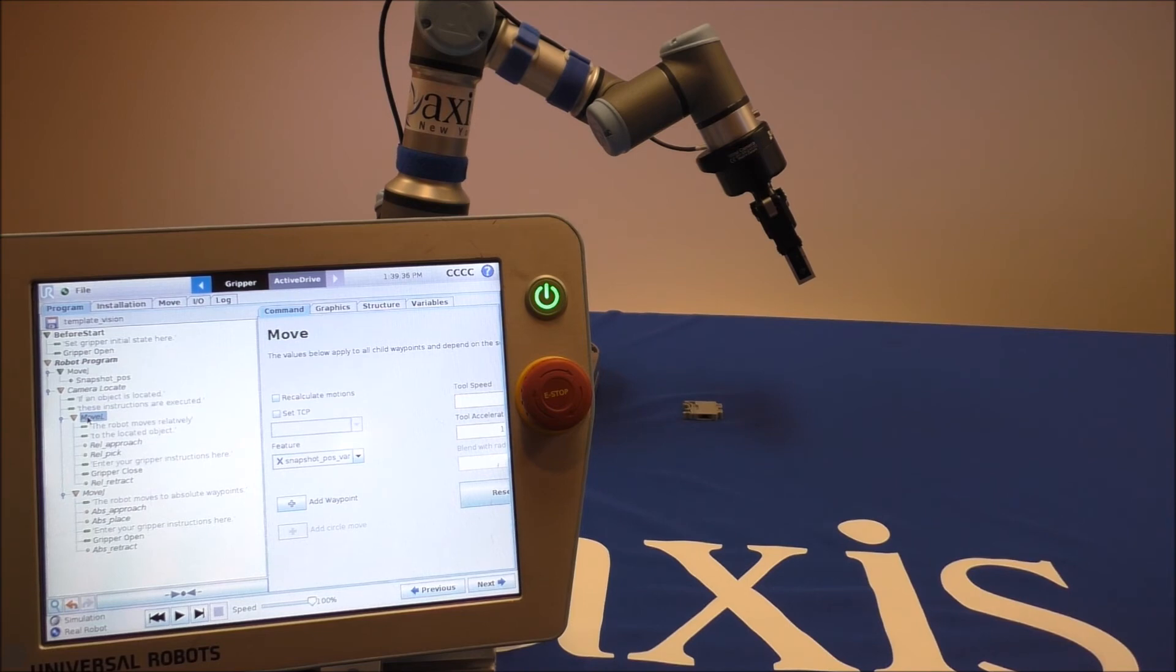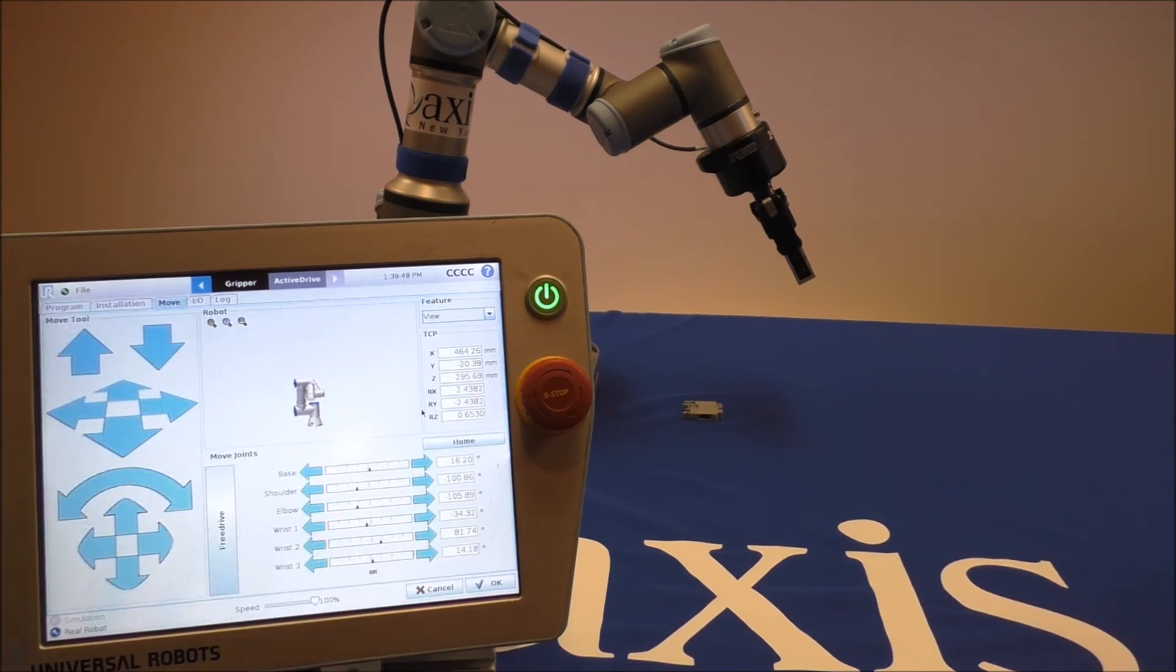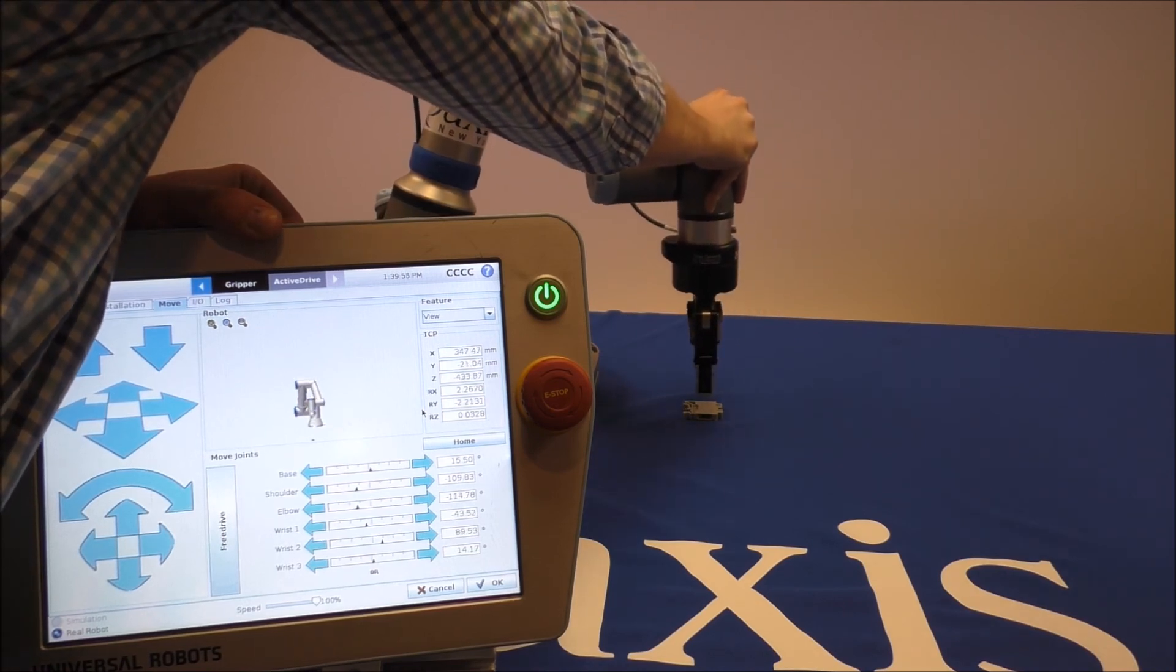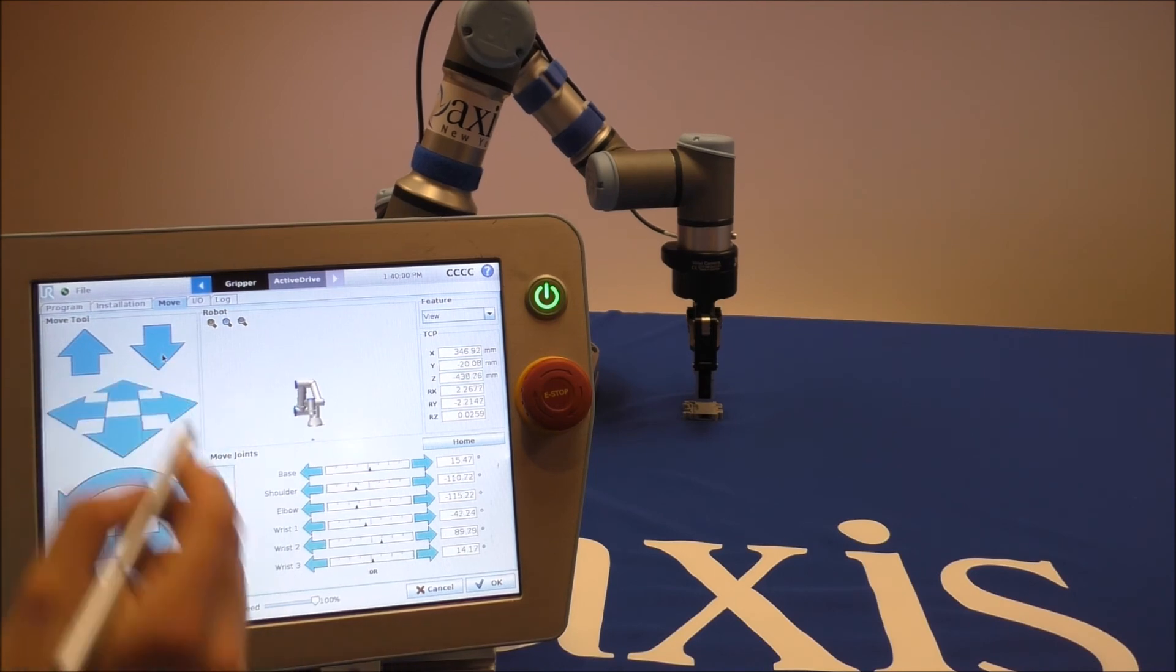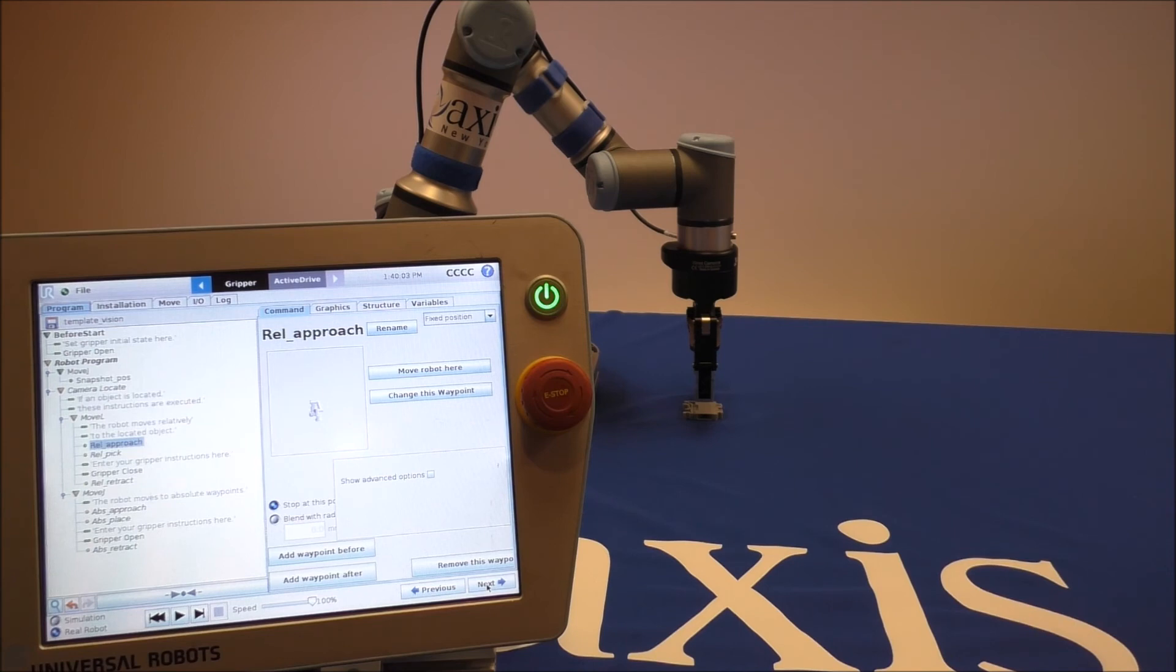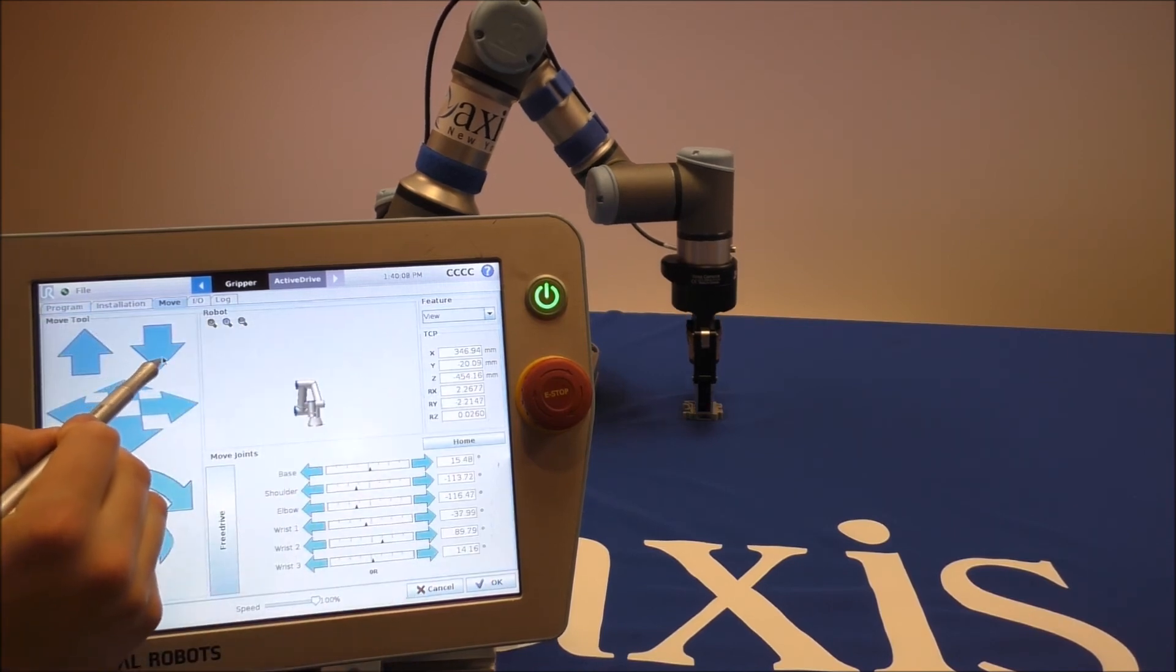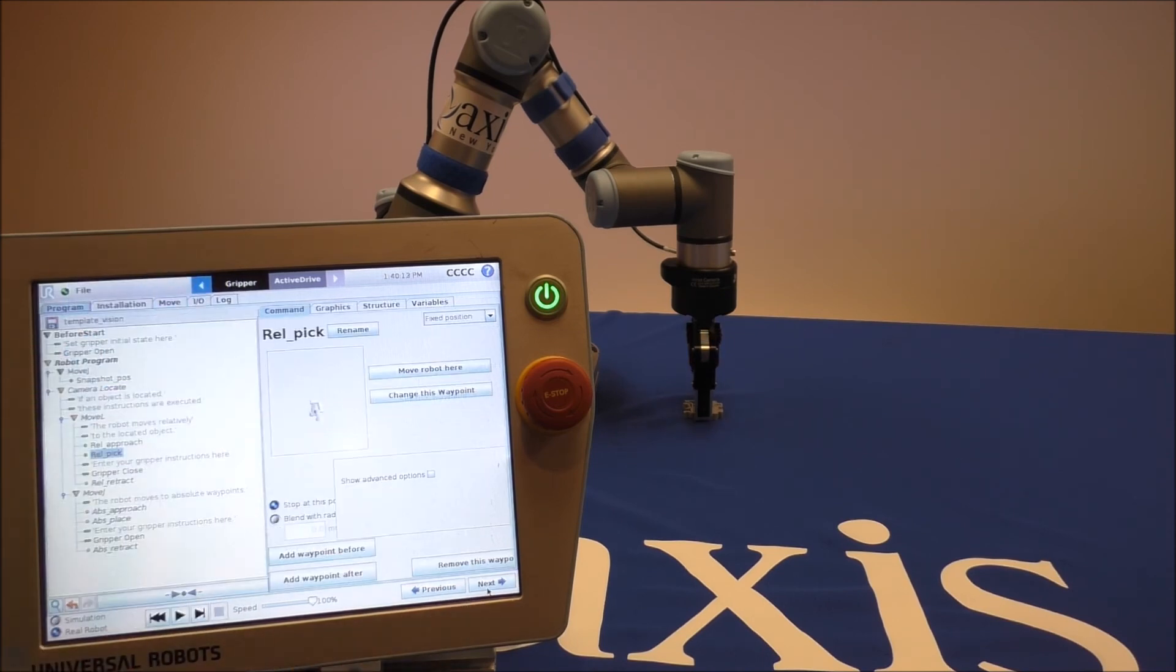You can set your relative positions by either using the free drive or by using the move functions. Here I'm going to free drive the robot until it gets close and then refine with the move keys. So I have my approach position and I have my pick position.